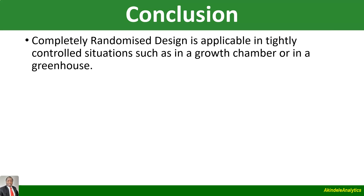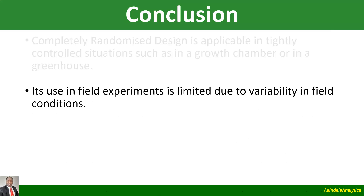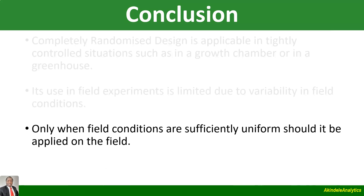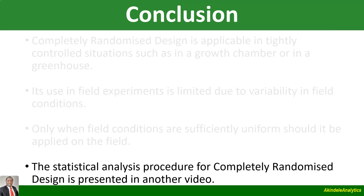In conclusion, CRD is applicable in tightly controlled situations such as in a growth chamber or greenhouse where you can maintain homogeneous experimental units. Its use in field experiments is limited due to variability in field conditions — fertility gradients and many other differences make CRD less practicable over large areas. Only when field conditions are sufficiently uniform should CRD be applied on the field. The statistical analysis procedure for completely randomized design is simple and straightforward, and that will be presented in the next video.